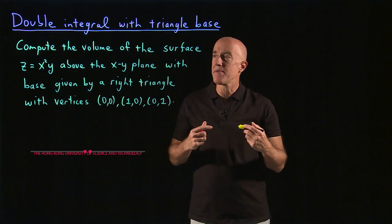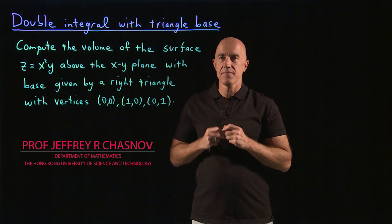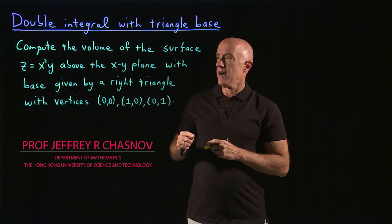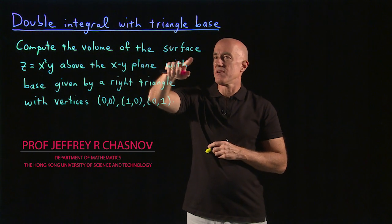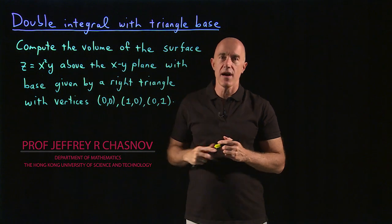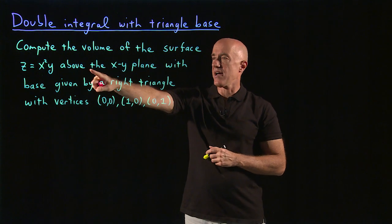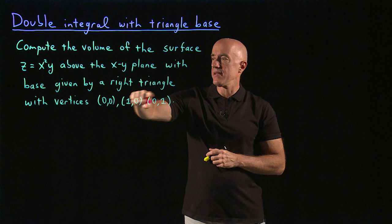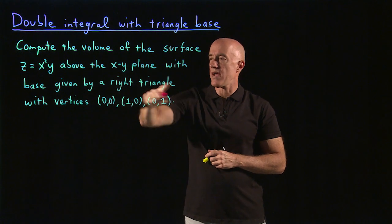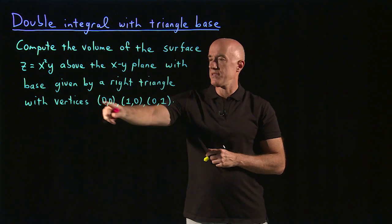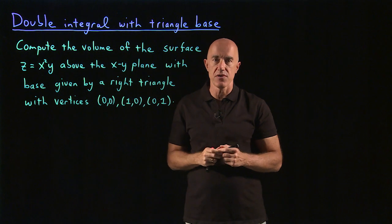So let me do another example of a double integral in this lecture. Compute the volume of the surface z equals x squared y, the same surface as last time, above the xy plane with base given by a right triangle with vertices (0,0), (1,0), and (0,1).